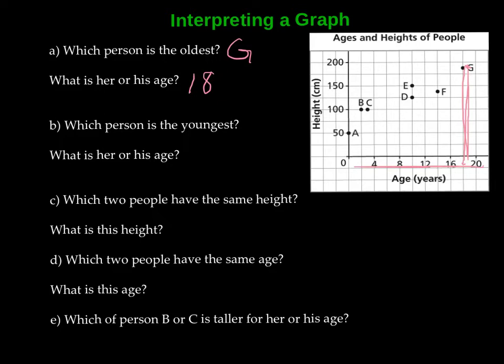Alright, so which person is the youngest? Alright, so we have, let's see which person we find closest to the beginning of the age here. Okay, so that's there. So which person is the youngest? Well, that would be person A. Alright, and what is their age? Well, they are zero. That's probably because they're a baby and they were just born. They're zero.